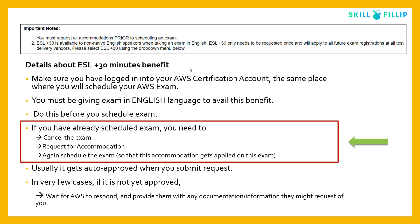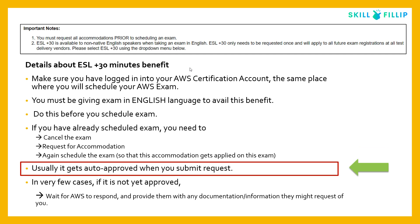If you have already scheduled your exam but want to avail this benefit, follow these steps: first cancel the exam, then request the accommodation, and then schedule the exam again so that this accommodation gets applied. As we saw in the demo, it gets automatically approved when you submit the request.